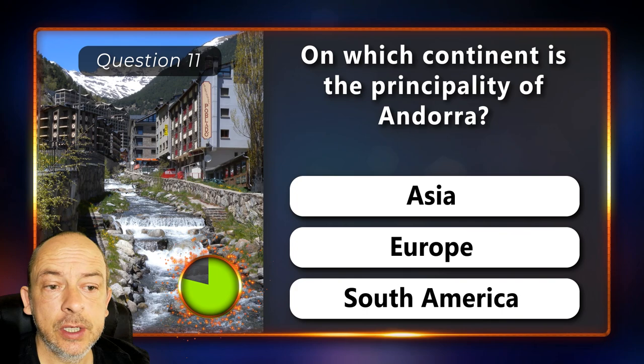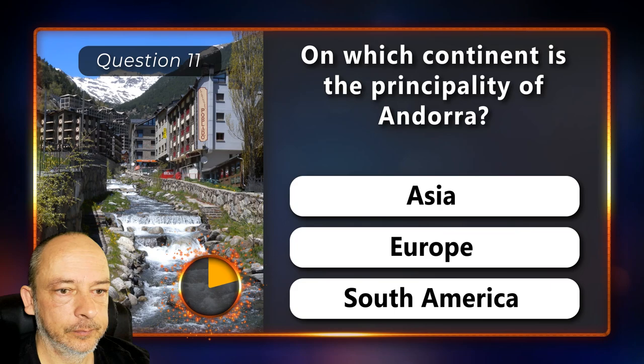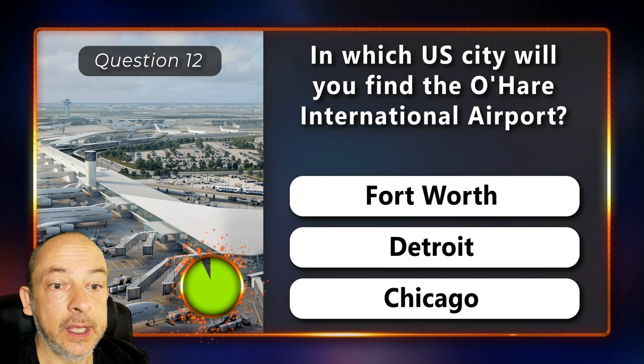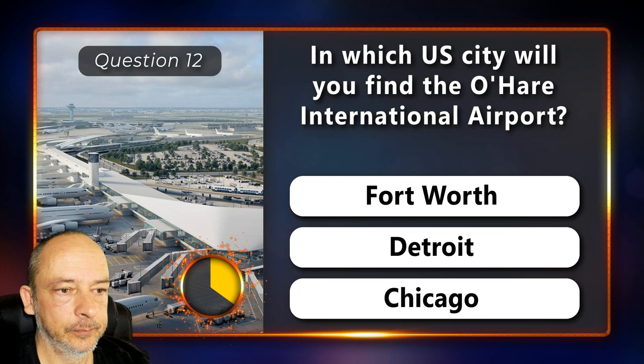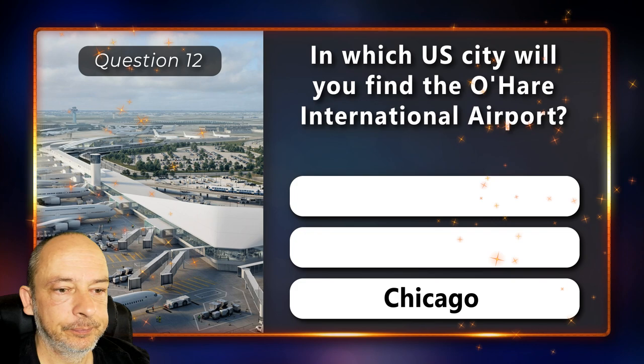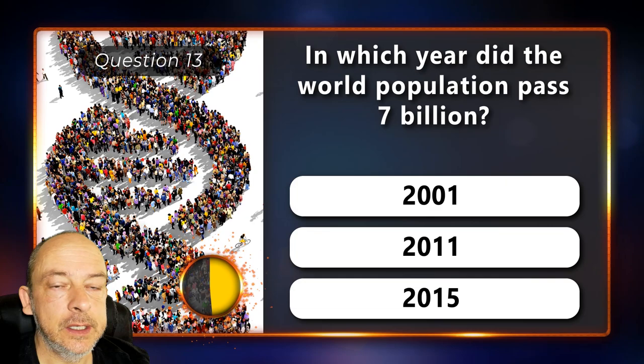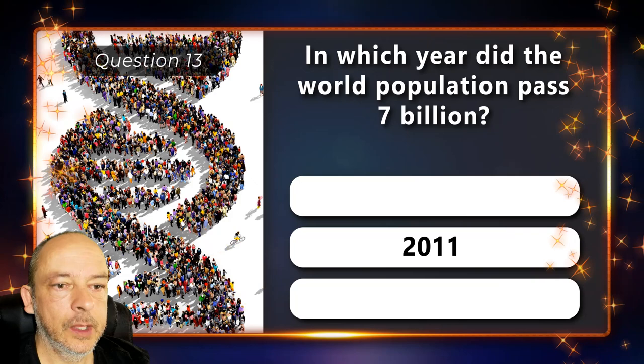Question 11: On which continent is the principality of Andorra? Is it in Asia, Europe or South America? It's in Europe. Question 12: In which U.S. city will you find O'Hare International Airport? Fort Worth, Detroit or Chicago? It's in Chicago. Question 13: In which year did the world population pass 7 billion — in 2001, 2011 or 2015? In 2011.